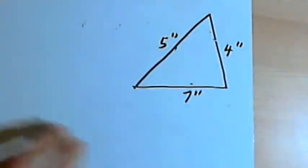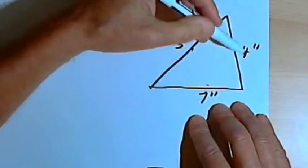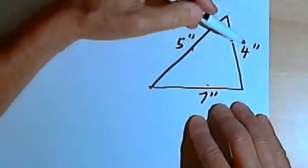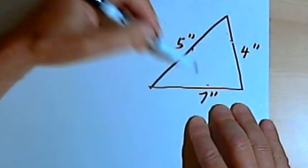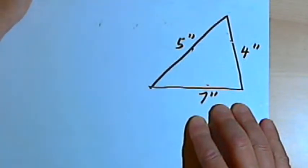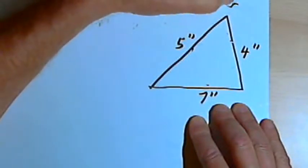So here's the second example. In this case, we've got a triangle and we have all three sides. One side is 4 inches, one side is 5 inches, and one side is 7 inches. But let's say we want to find one of the angles. Let's say we want to find the angle at the top. So I'm going to call that angle c.